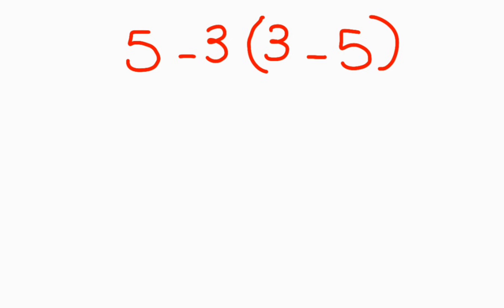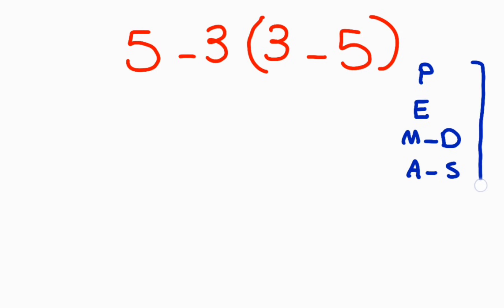According to PEMDAS, we have to solve this math expression like this: first parentheses, then exponents, then multiplication or division, and then addition or subtraction. In the first step, we have one parenthesis that we have to solve first — not the multiplication and subtraction. If you do multiplication and subtraction first, it is wrong.